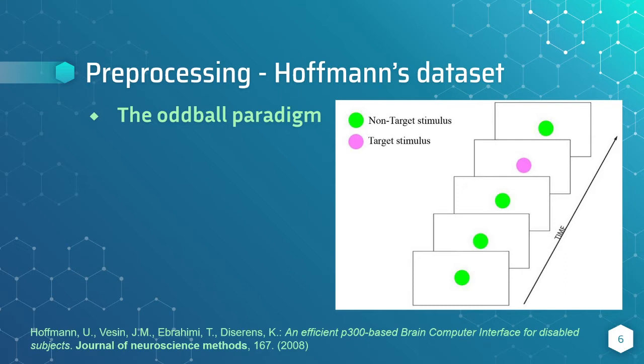Let's talk about the dataset. We use the Hoffman dataset, which follows a common way of generating P300 in the context of BCIs, the well-known oddball paradigm. A set of stimuli of two categories, target and non-target, are presented to the subject, and our task is to classify when the target is presented. When the subject sees the target, a P300 should appear.